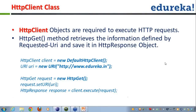It will be more clear when we do a working copy, but for now take a look at this code snippet. When creating an HTTP client, I'll get the default HTTP client, then pass in a URI — the Uniform Resource Identifier. Here I can pass in a URL, for example edureka.in, to retrieve all the HTML content present on that website.